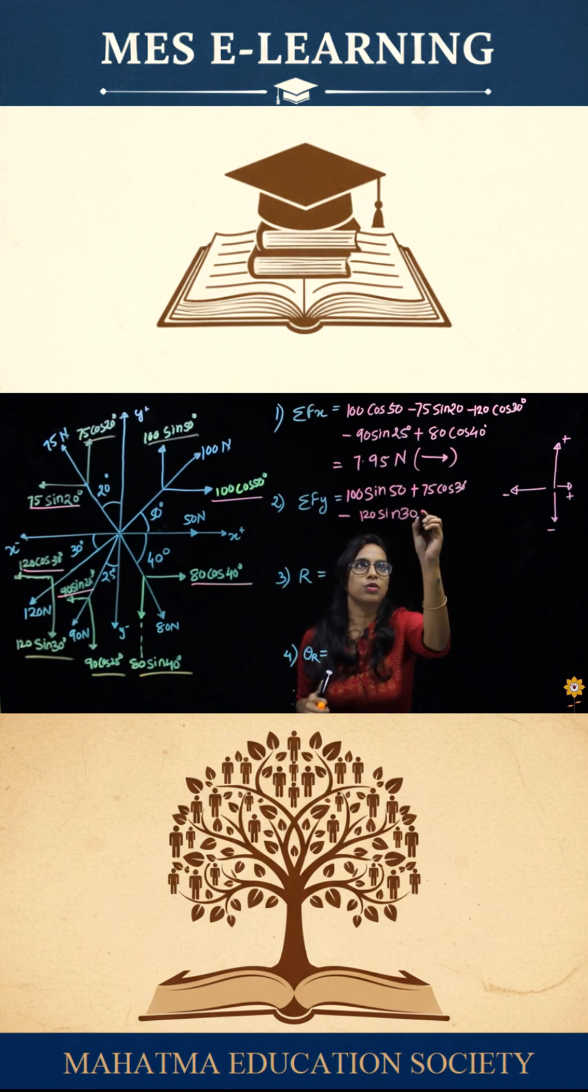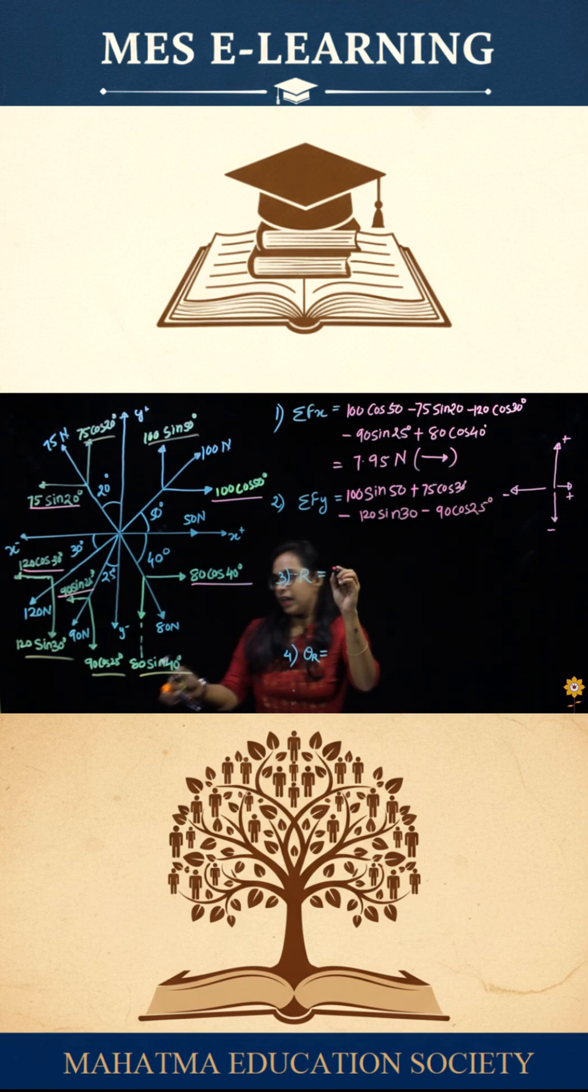Next force is 90, which is also going downwards, so it would be minus 90 cos 25. Next force is 80 sine 40, which is also going downwards.